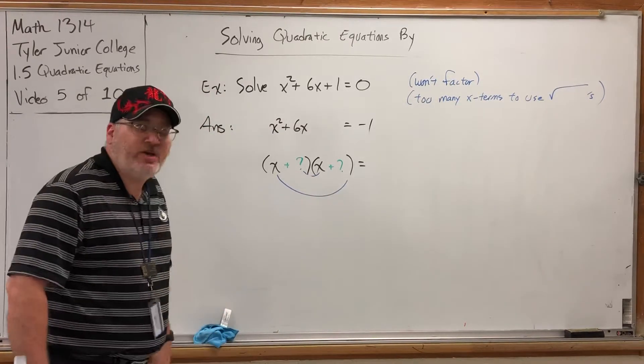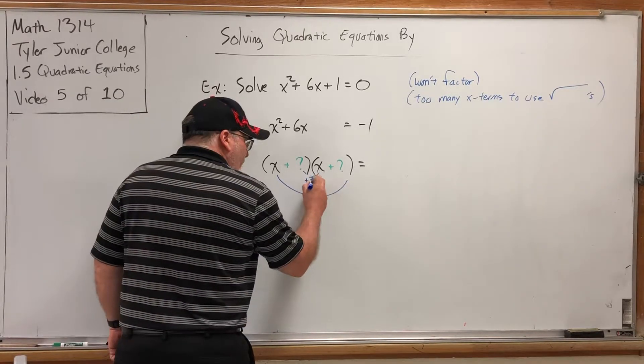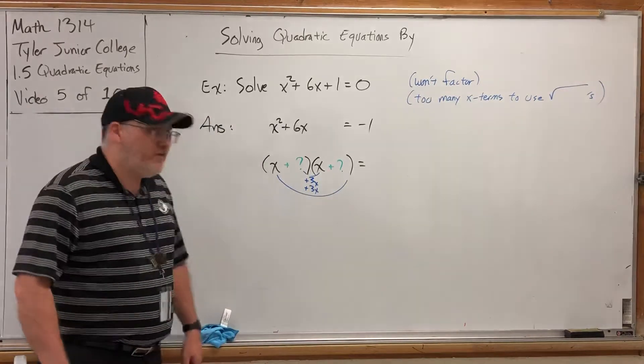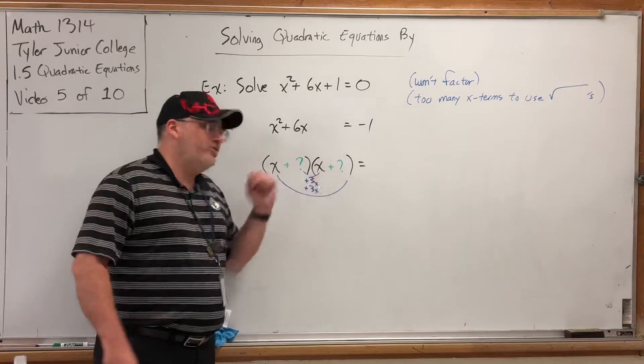So what can I write that matches itself and adds to give 6x? Well, what's half of 6x? 3x. So I know that whatever this FOIL problem is, the outside and inside must give me plus 3x and plus 3x because I need it to be 6, but I also need them to match.